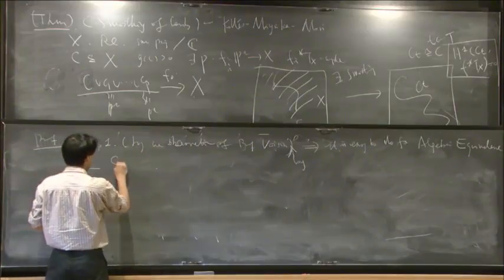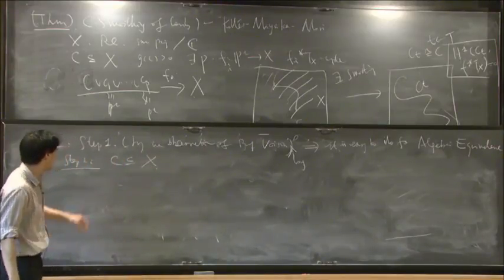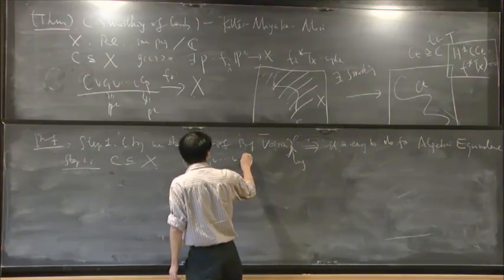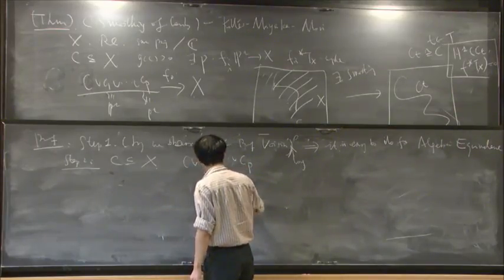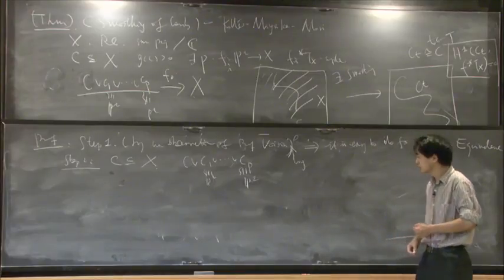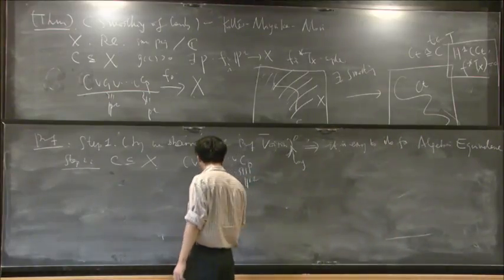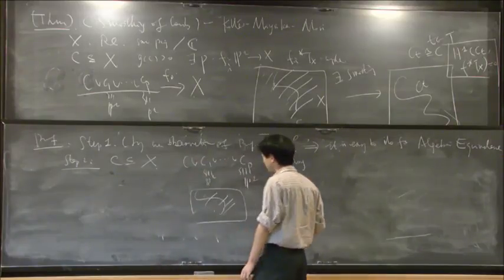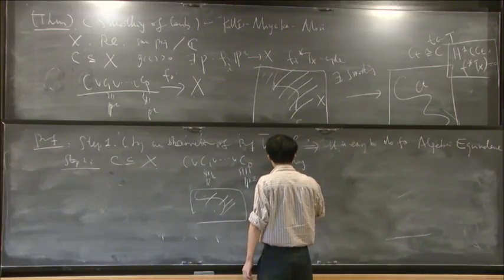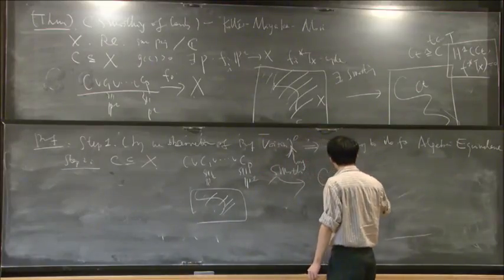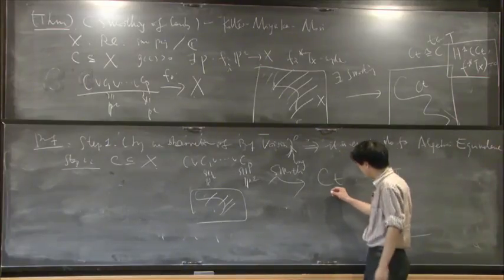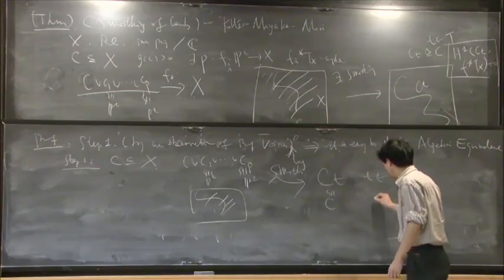Step two: we have a curve C belonging to X, and we have to show it is algebraically equivalent to a sum of rational curves. The idea is to find some very free rational curves inside X to form a comb — a nodal curve. This comb is C plus some rational curves. By our main technical theorem, we smooth it to a general family of stable nodal maps; the general member Cₜ is isomorphic to C.